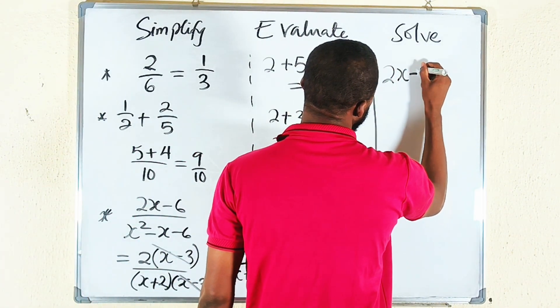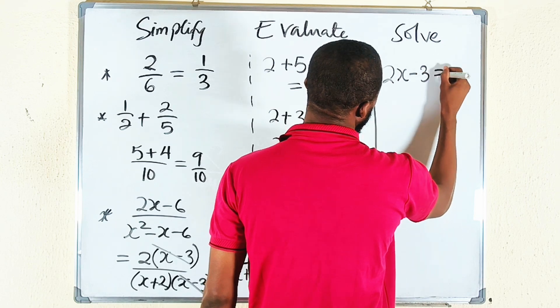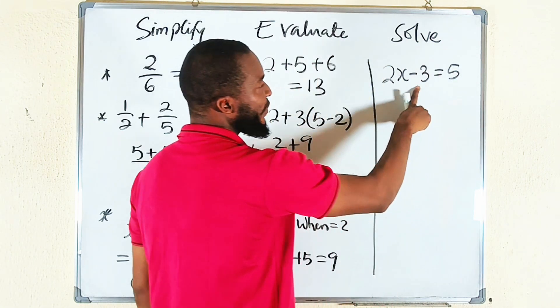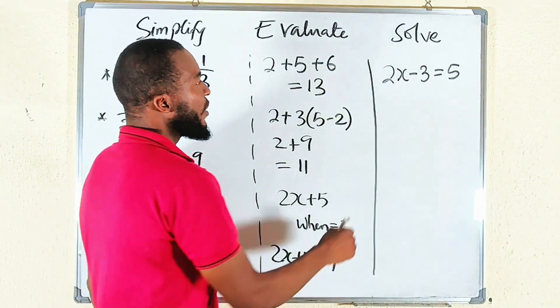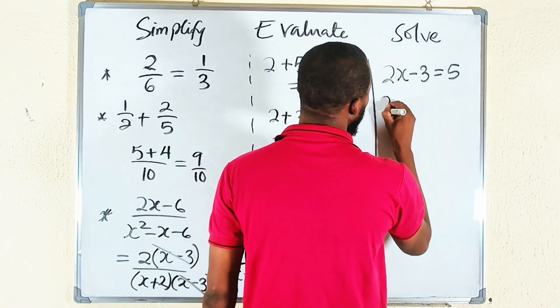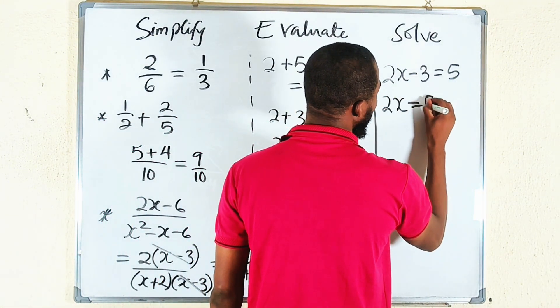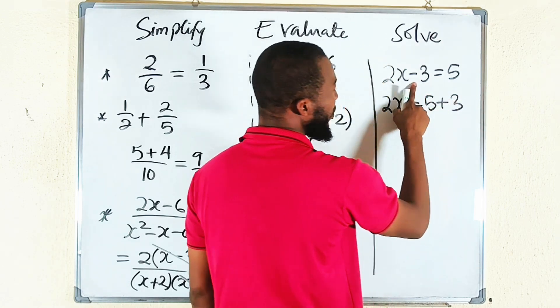2x minus 3 is equal to 5. So what is the value of x that will make this equation true? You take this one to the other side. You have 2x equal to 5 plus 3, because it is going to change sign. 2x is equal to 8.